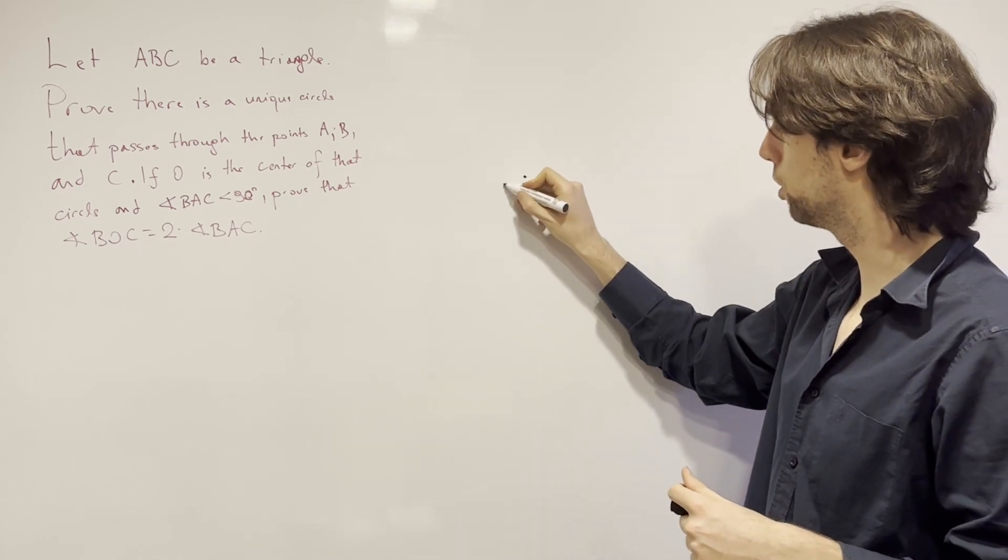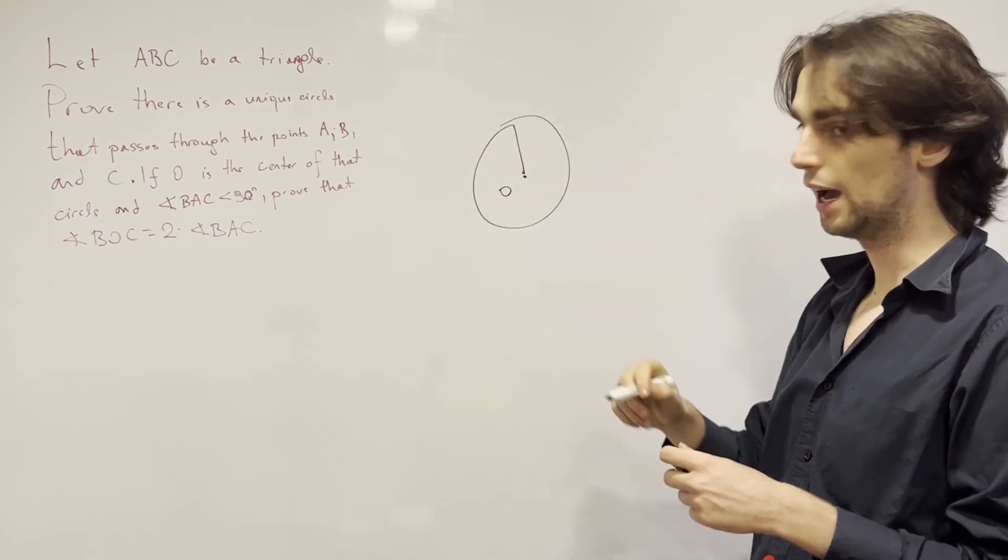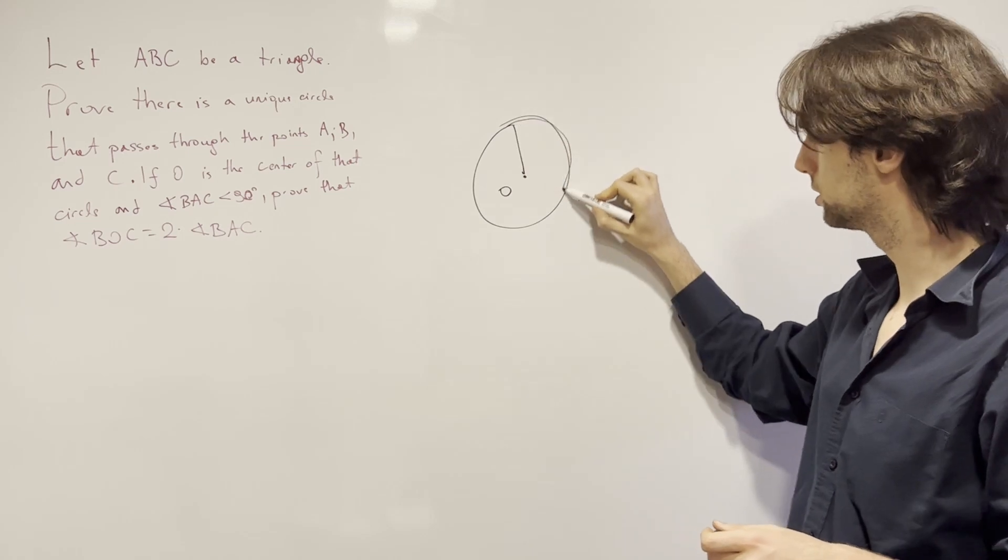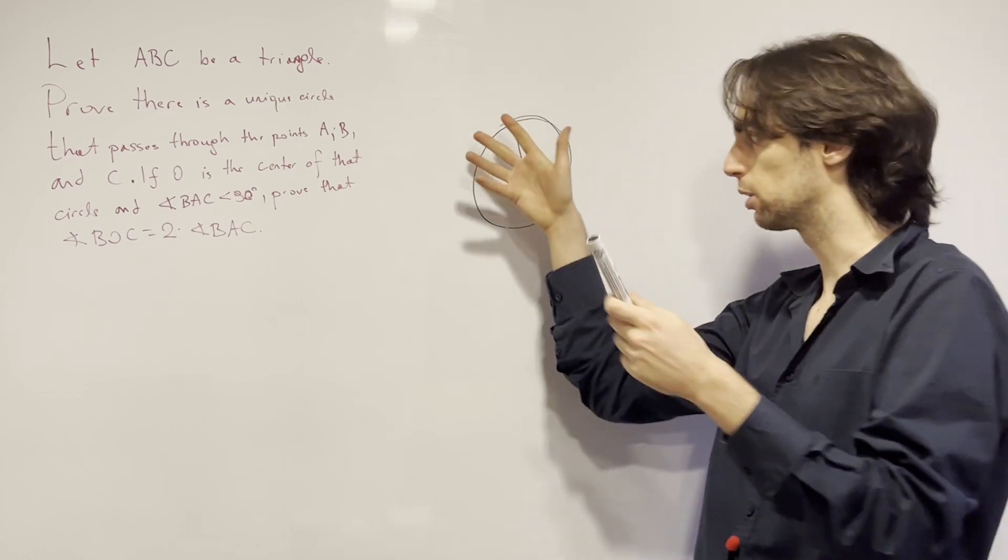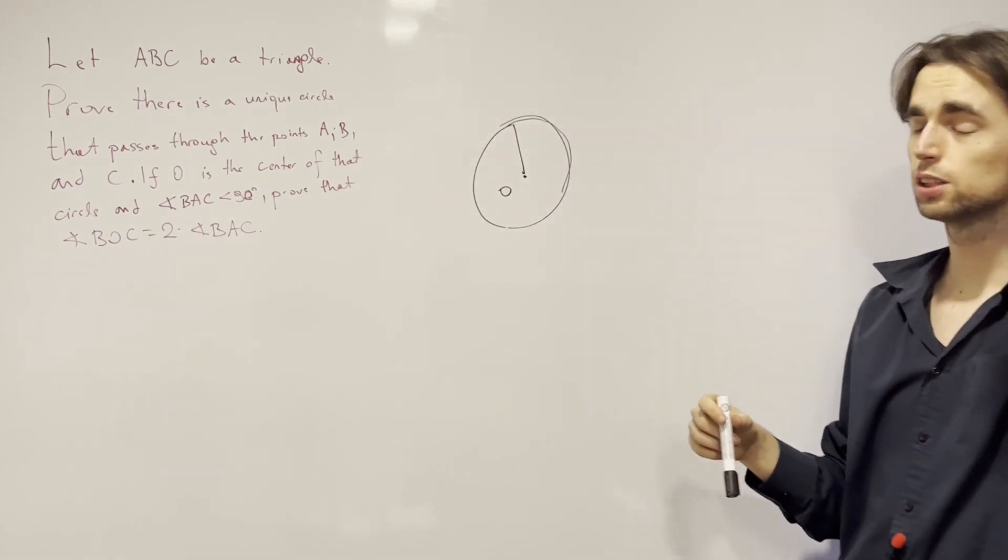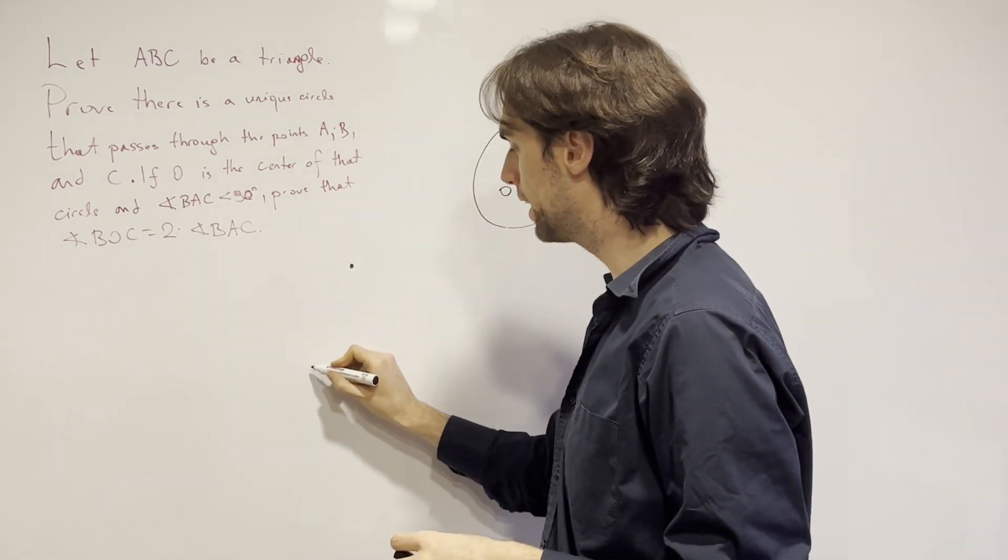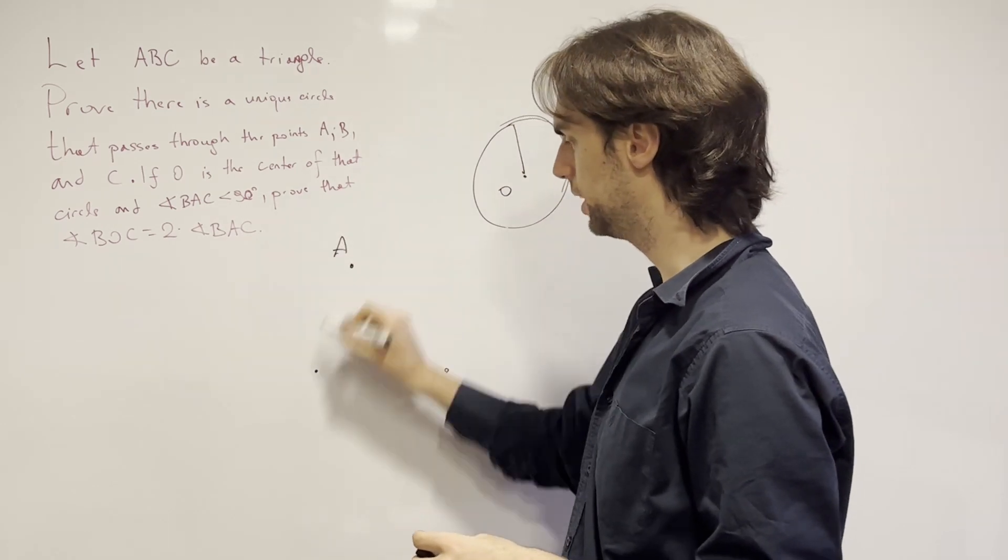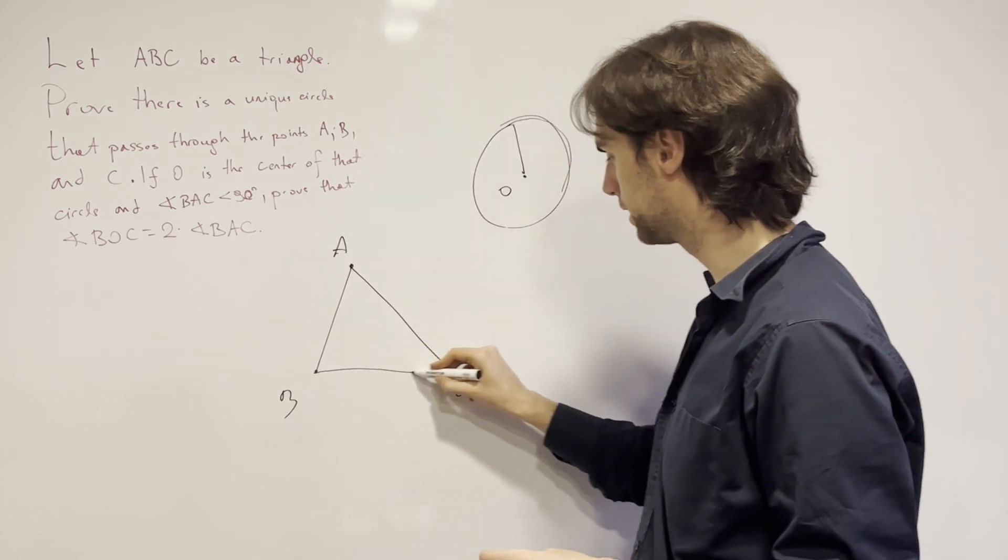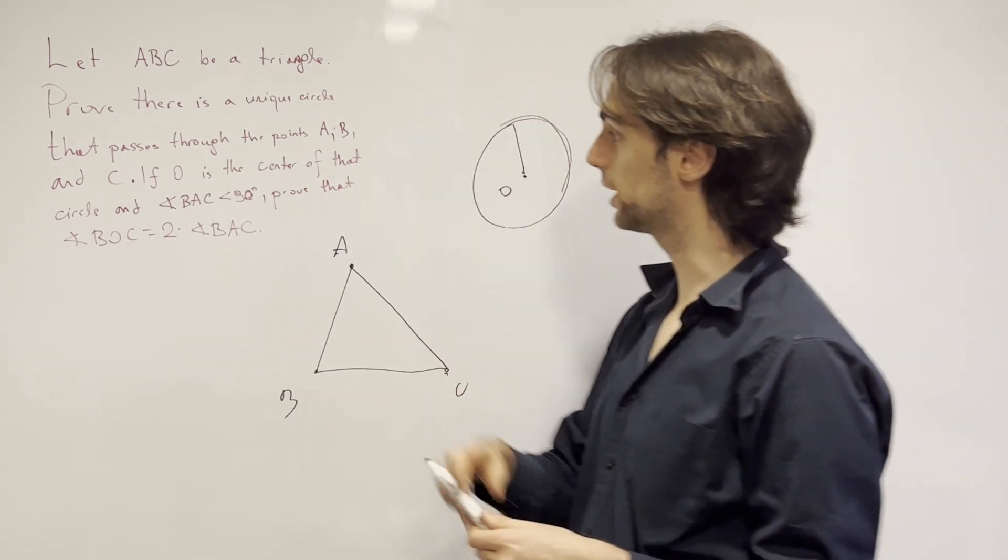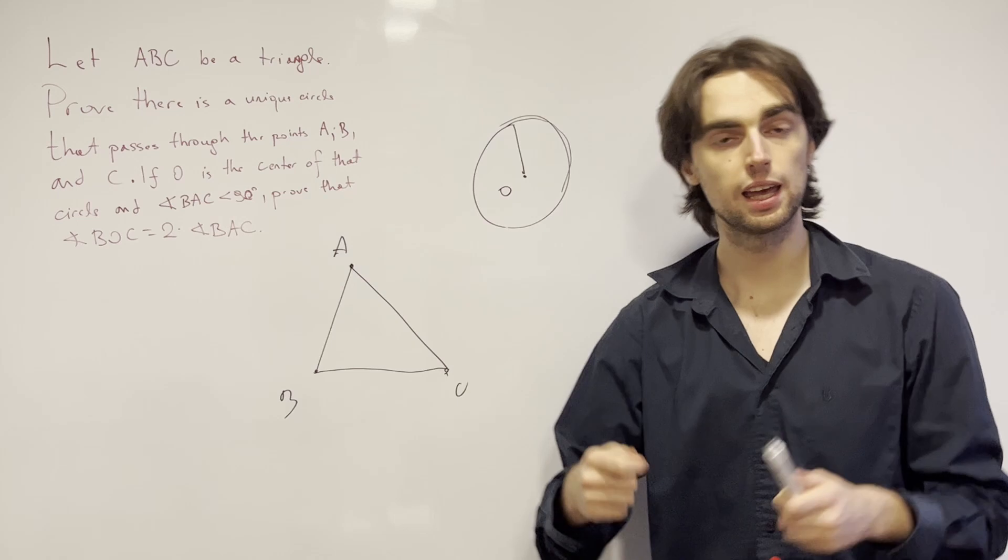So it's defined by a center O and a radius. And every point on this circle is equidistant to O as any other point to O. So with this, this is the definition of a circle. Now we're saying that if we have any triangle A, B, C, where we have A, B, and C, that we will have a unique circle that passes through the points A, B, and C.